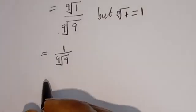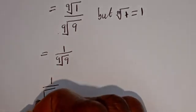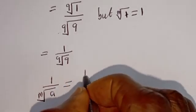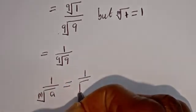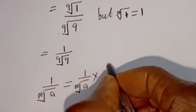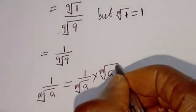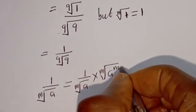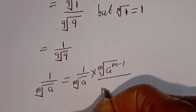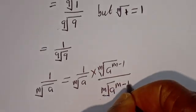Now take note of this rule: if you have 1 divided by the m-th root of a, this is equal to 1 divided by the m-th root of a, multiplied by the m-th root of a to the power of m minus 1, divided by the m-th root of a to the power of m minus 1.